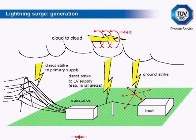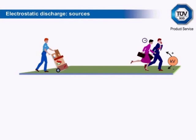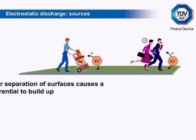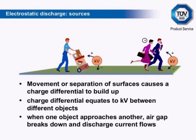The ESD immunity test is intended to simulate the threat from a nearby or direct discharge from a charged person. It does not represent other sources such as furniture or vehicles. When movement occurs between two surfaces, the triboelectric effect causes a separation of charge between them, building up an electric potential on each surface and by extension on the body beneath. This charge is then equalized when the body touches another object. If that object is electronic apparatus, the resulting discharge current can cause malfunction and even damage to sensitive electronic components.